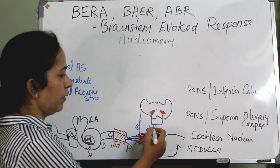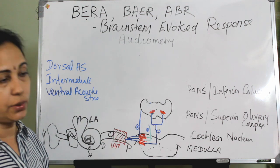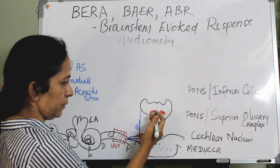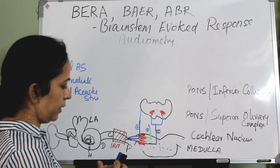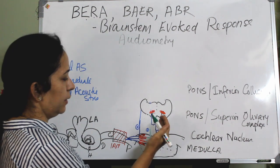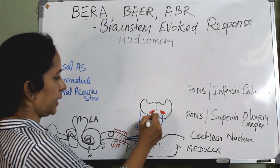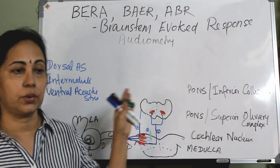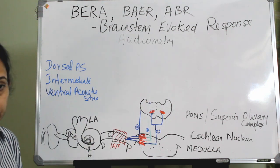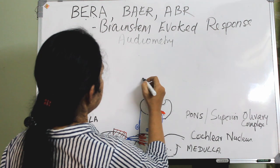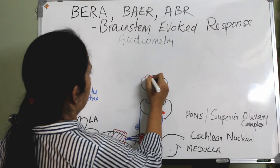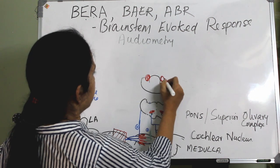All three acoustic striae — ventral, intermediate, and dorsal — cross to the opposite side at the level of the superior olivary complex. In the upper pons, the next relay station is the nucleus of the lateral lemniscus.